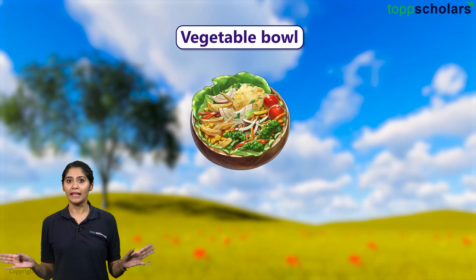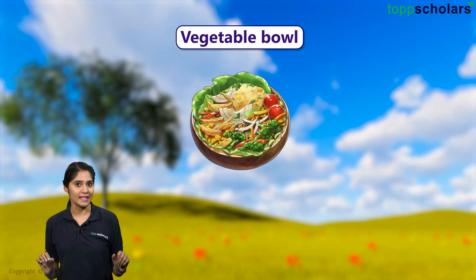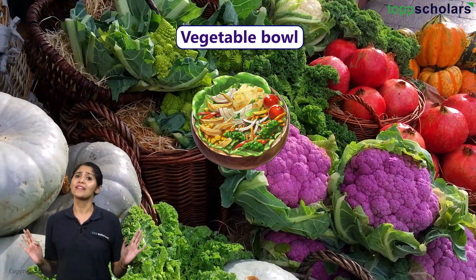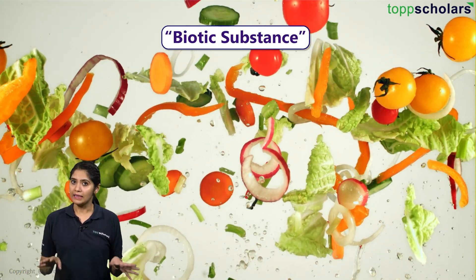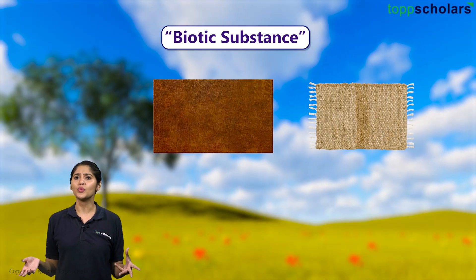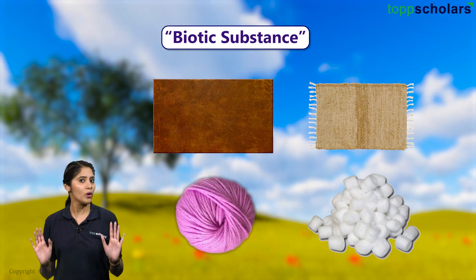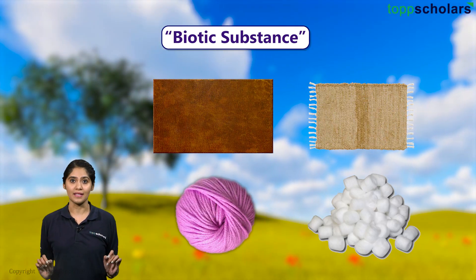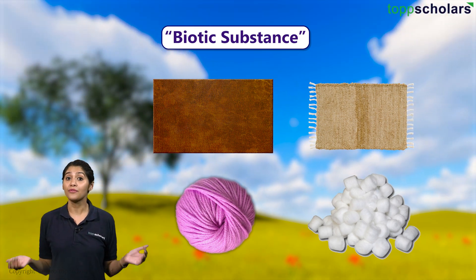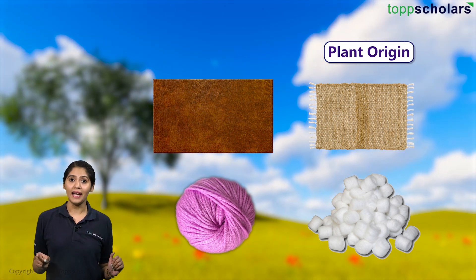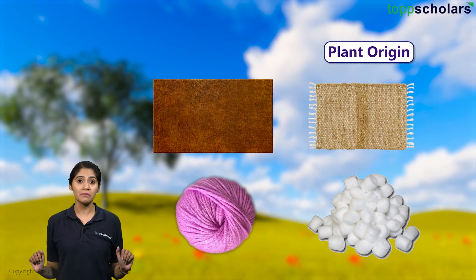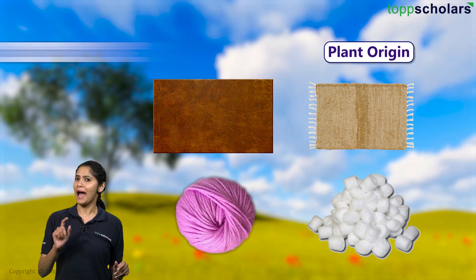A vegetable bowl in our daily meal has natural substances in it. These were all alive at some point of time. So the substances which we gain from living things are called biotic substances. Other natural products such as leather, jute, wool and cotton can also be classified as biotic substances. Jute and cotton are obtained from plants, so they have plant origin. We obtain leather and wool from animals, so these come from animal origin.